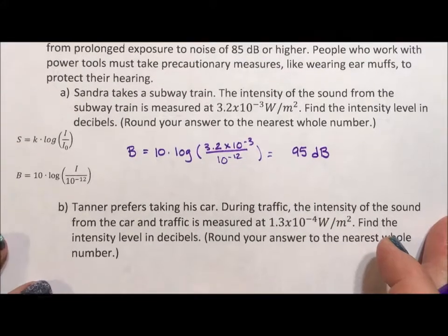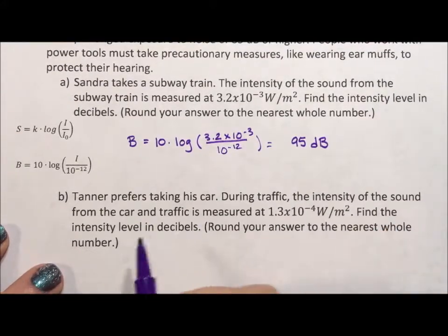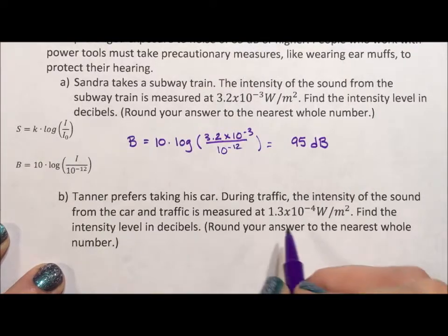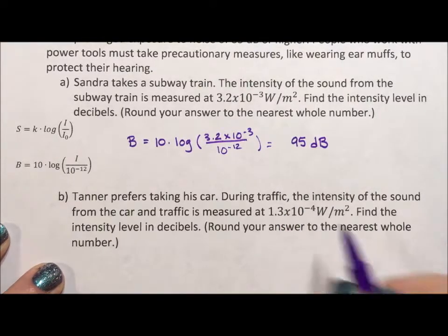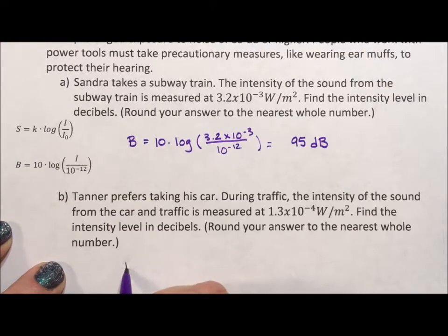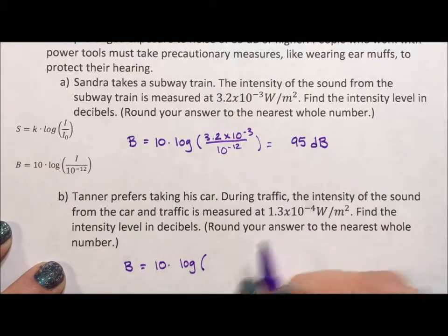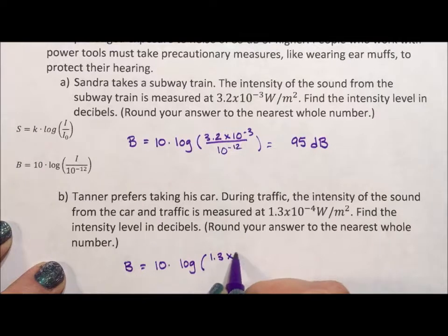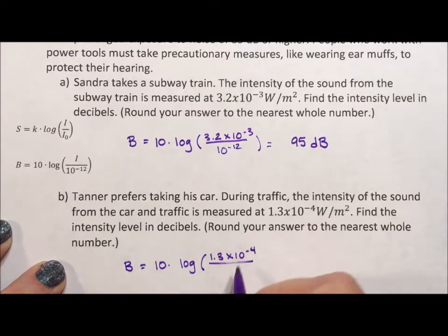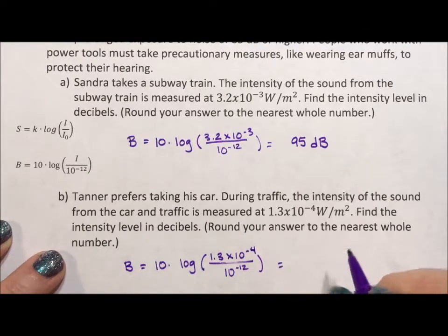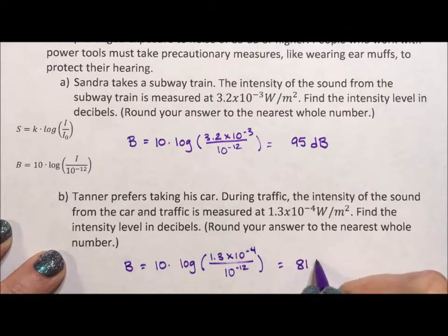So that was Sandra's way of getting around. But what about Tanner? Tanner prefers to take his car, but the intensity of the sound from the car and the traffic is 1.3 times 10 to the negative 4 watts per square meter. So in this case, we have the same basic equation. We change the numerator of the argument of the log to 1.3 times 10 to the negative 4, though the denominator stays as 10 to the negative 12. And when we throw this into our calculator, we get that Tanner's car is 81 decibels — a little bit safer.